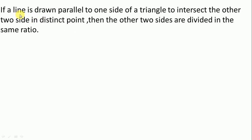First we see the statement of the theorem: If a line is drawn parallel to one side of a triangle to intersect the other two sides in distinct points, then the other two sides are divided in the same ratio. In the statement, a triangle - here is a triangle - so we need one triangle, so just draw a triangle named ABC.